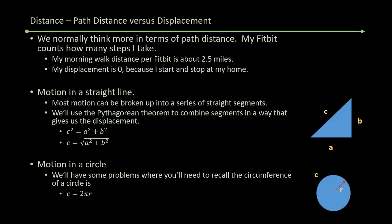You normally think of distance that you go as what I call your path distance, which is not the same as your displacement. Here's an example. I take a walk almost every morning. My Fitbit counts the number of steps I take, and it reports out almost every morning I've done about 2.5 miles. That's how far I walked along the path I traveled. But my displacement is zero because I start and stop at my home. I ended up exactly where I started. So if you were to measure the distance between where I started to where I stopped, that's zero.